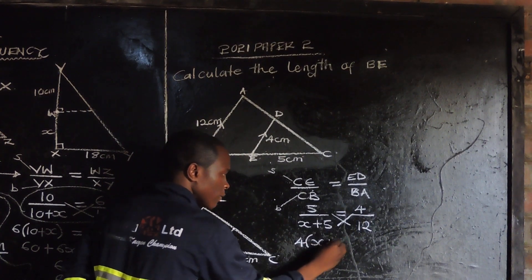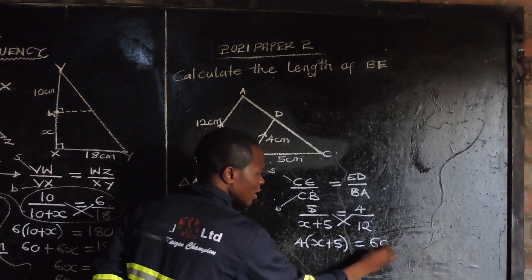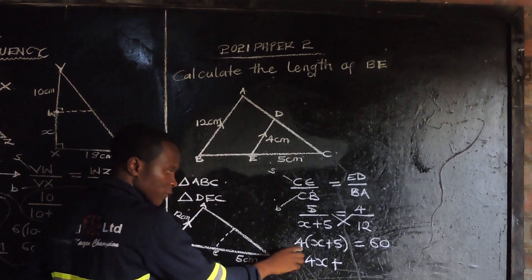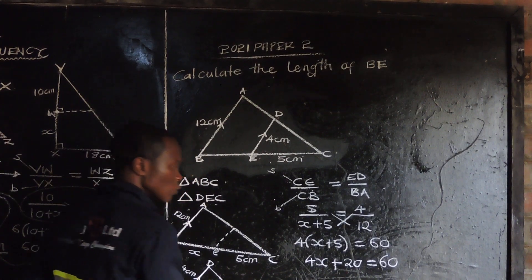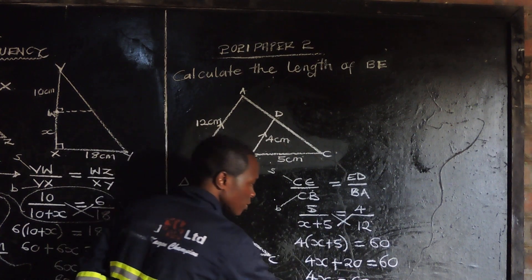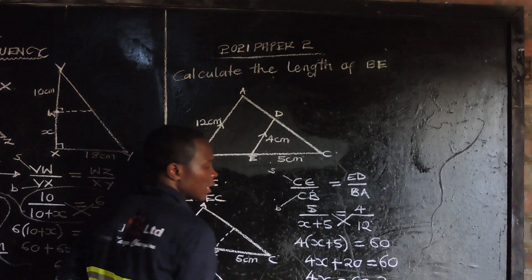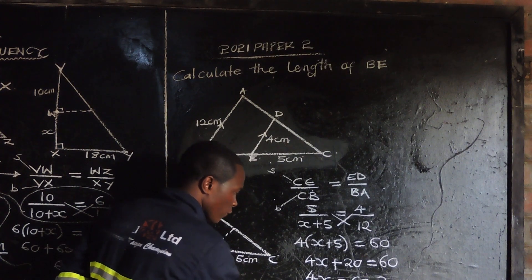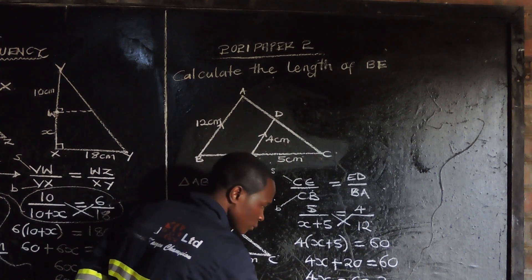Four multiplied by X plus five is equal to 12 times 5, which is 60. So 4X plus 20 is equal to 60. Therefore 4X is equal to 60 minus 20, which gives 4X equals 40. So X is equal to 40 divided by 4, which gives X equals 10.